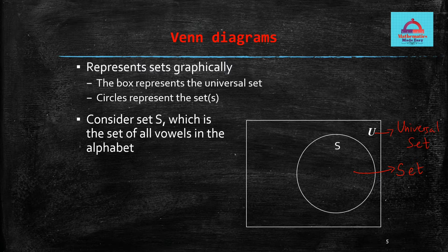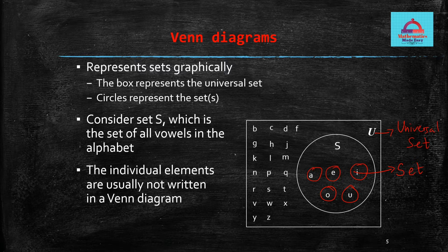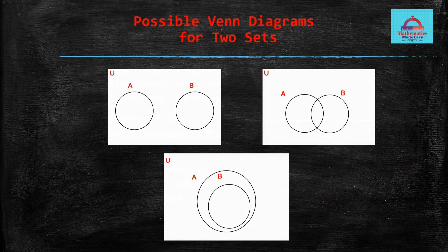These are the two important parts of a Venn diagram. We are considering an example of a set S which is the set of all vowels in the alphabet — so the five vowels A, E, I, O, U are placed inside the set S. All the remaining other alphabets, which are not vowels, are outside the circle but inside the universal set. The individual elements are usually not written in a Venn diagram.